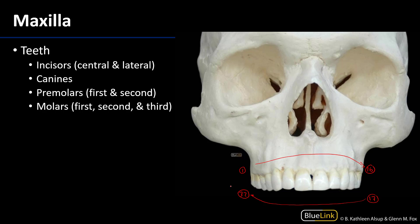We also give these teeth names, and we divide them up by quadrant. In each quadrant we have a central incisor, a lateral incisor, a canine, a first premolar, second premolar, and then first, second, and third molars. Humans, by virtue of evolution, generally don't have space to accommodate their third molars. These tend to erupt later in life — towards the end of the teens or early 20s — so we call them wisdom teeth.